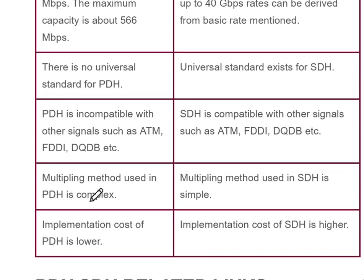The multiplexing method used in PDH is complex, while the multiplexing method used in SDH is simple. The implementation cost of PDH is lower and the implementation cost of SDH is higher.